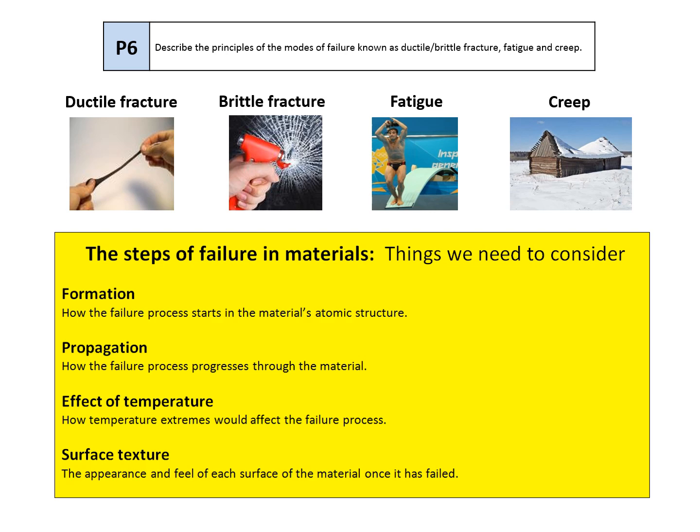First, formation—where in the atomic structure does each mode of failure start and why. Second, propagation—once it starts at the formation point, how does it move through that material and why. Third, the effect of temperature—I'll give you either hot or cold for ductile or brittle fracture, and I'll ask you what is the effect of that extreme on the speed and way that mode of failure happens. Finally, surface texture—how does each of the ends of the broken surface look.